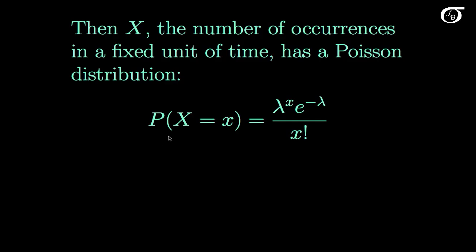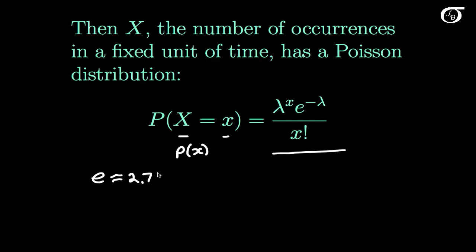This notation — the probability that the random variable X takes on the value little x — confuses people at times, so sometimes we just loosen it up and say the probability of little x equals this quantity. E is an important mathematical constant, the base of natural logarithms, approximately 2.71828. It takes on infinite decimal places and comes up very frequently in mathematics. I hope you're familiar with the term x factorial.